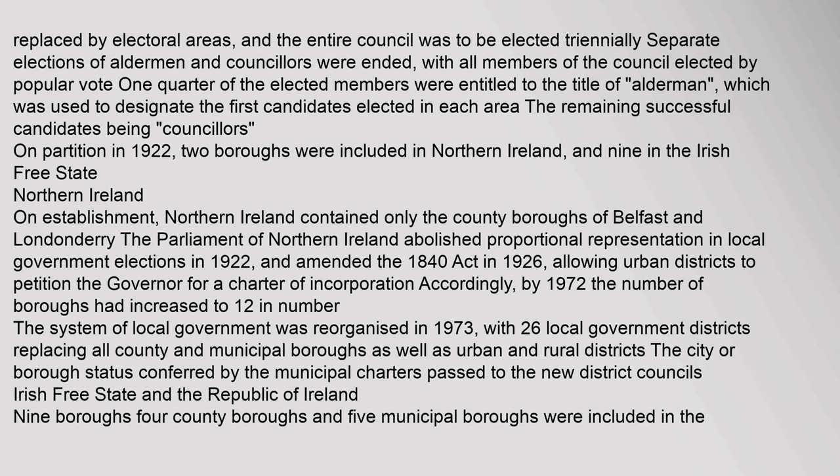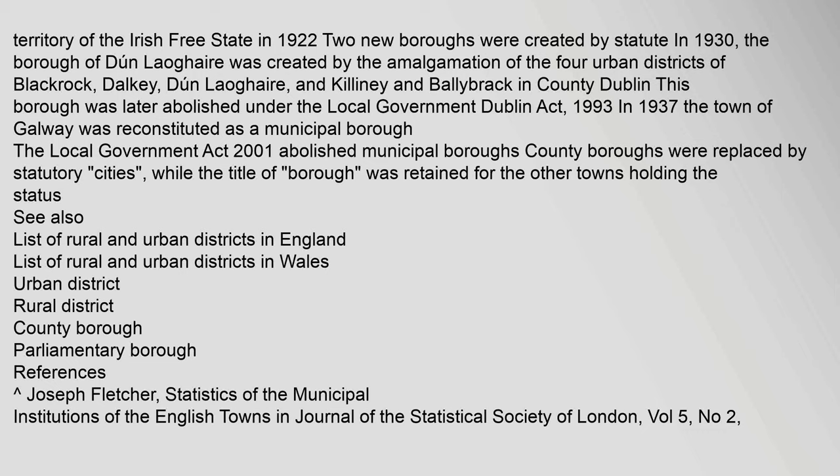Four county boroughs and five municipal boroughs were included in the territory of the Irish Free State in 1922. Two new boroughs were created by statute in 1930; the borough of Dún Laoghaire was created by the amalgamation of the four urban districts of Blackrock, Dalkey, Dún Laoghaire and Killiney-Ballybrack in County Dublin. This borough was later abolished under the Local Government Dublin Act 1993. In 1937 the town of Galway was reconstituted as a municipal borough. The Local Government Act 2001 abolished municipal boroughs; county boroughs were replaced by statutory cities, while the title of borough was retained for the other towns holding the status.